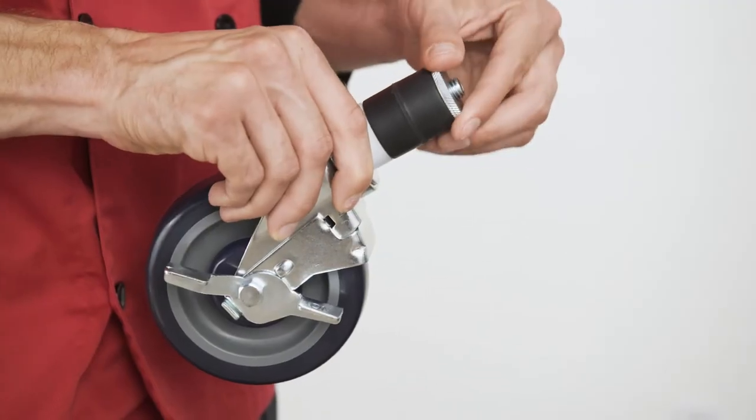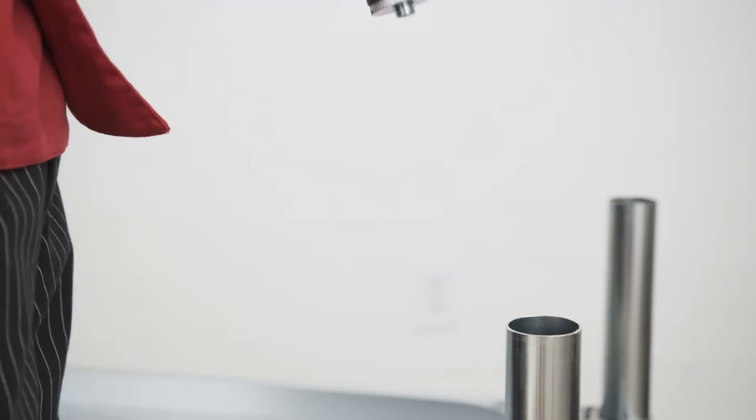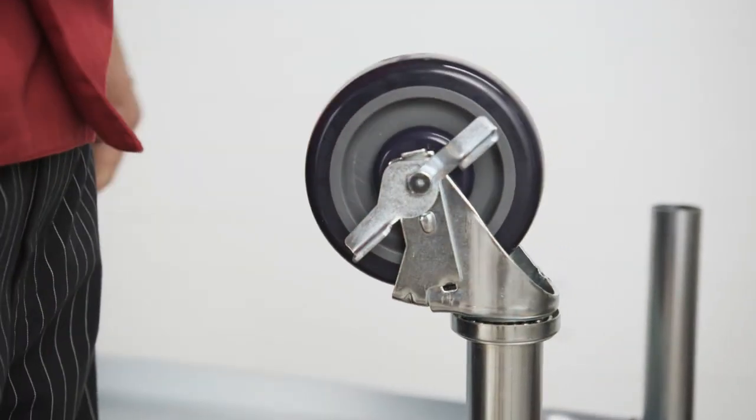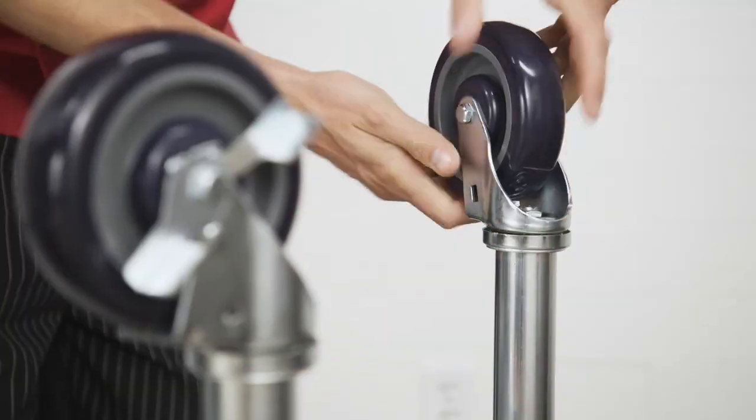Turn the nut on the top of the caster which pushes out and expands a plastic piece. Adjust this until the plastic piece provides a snug fit in the leg. Once the casters are in the legs, tighten them down as needed.